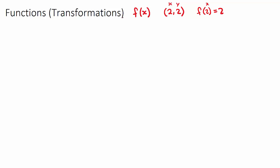The first type of transformation in this topic is called a translation. Translation is just a fancy word for shift. So if you see the word translation, you need to be thinking we're going to be shifting our function, or all of the points on our function — either left and right, or up and down. So horizontal shift and vertical shift.